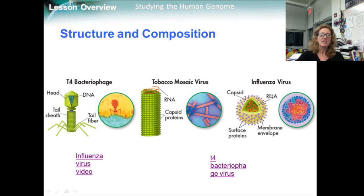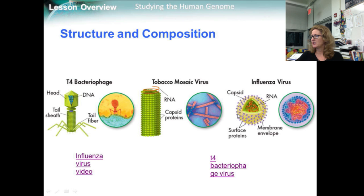A virus is a non-living particle made of proteins, nucleic acids, and sometimes lipids. Viruses can reproduce only by infecting living cells, and they differ widely in terms of size and structure. Most viruses are so small that they can only be seen with the aid of a powerful electron microscope. The protein coat surrounding the virus is called a capsid. Some viruses, such as the influenza virus, have an additional membrane that surrounds the capsid. The simplest viruses contain only a few genes, whereas the most complex may have more than 100 genes.